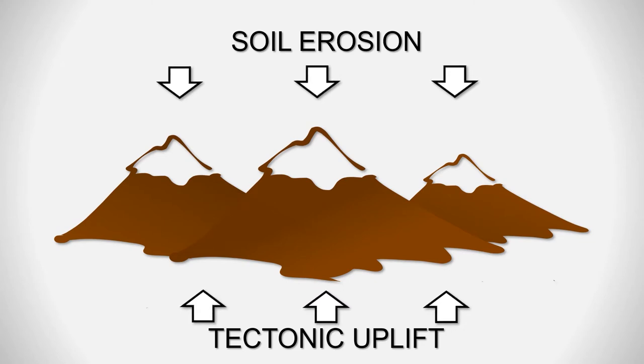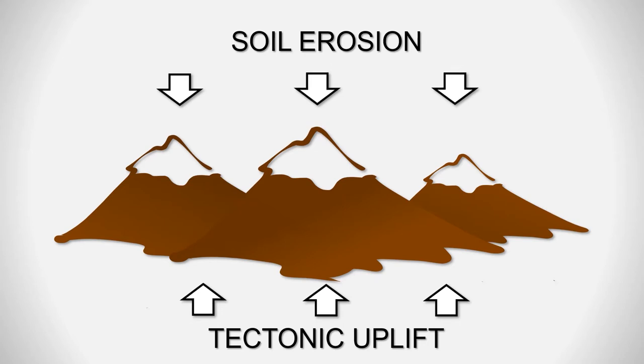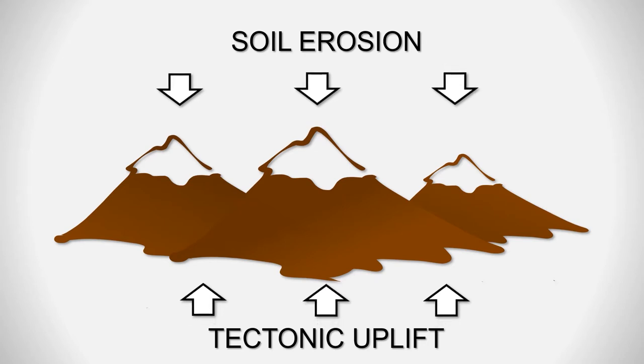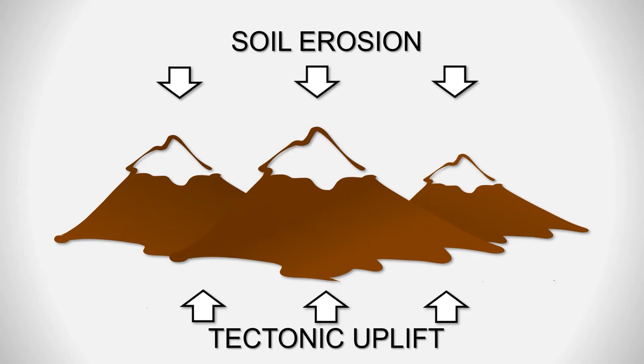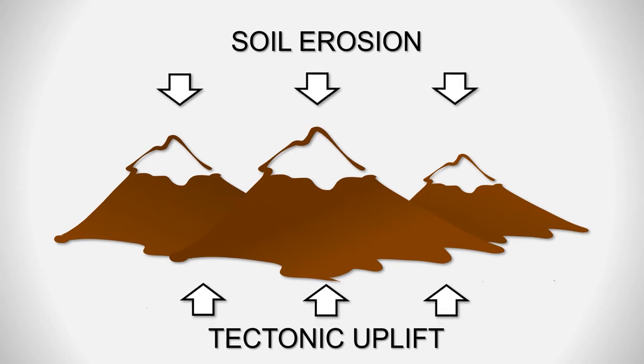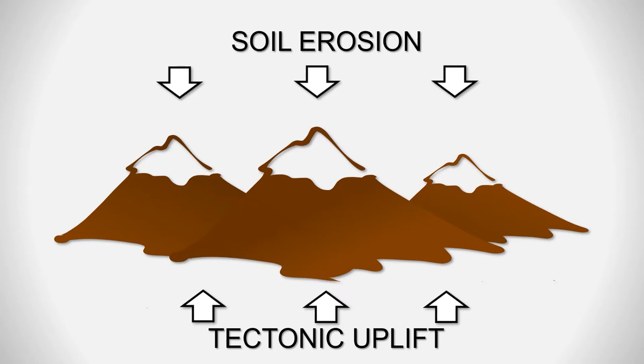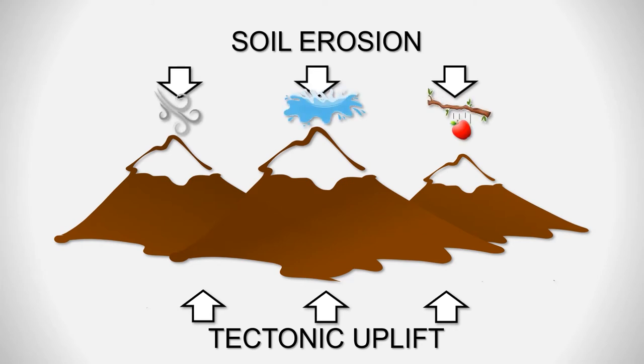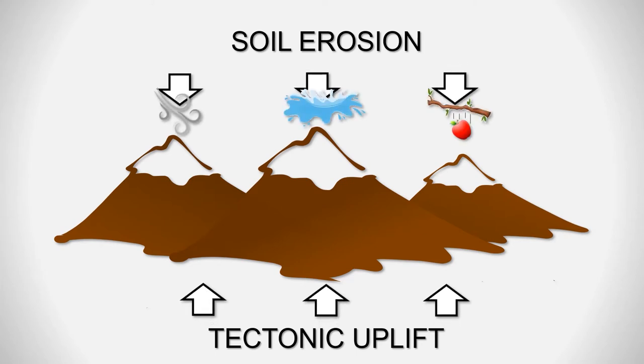Erosion is defined as the process of detachment and transport of soil particles on the surface, that can be carried out by wind, water or gravity.